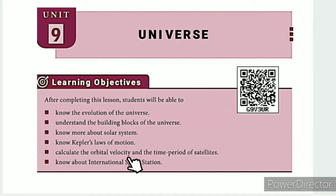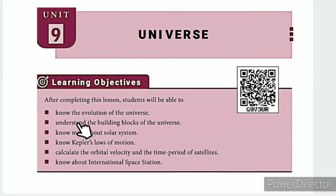This QR code link is in the description box. The evolution of the universe will be explained via the ICT corner link, which is also in the description box.